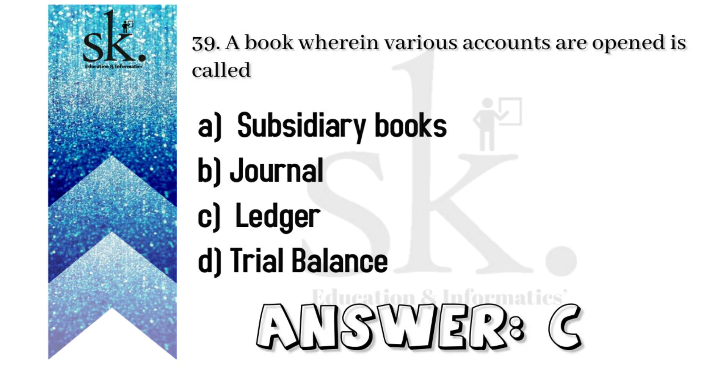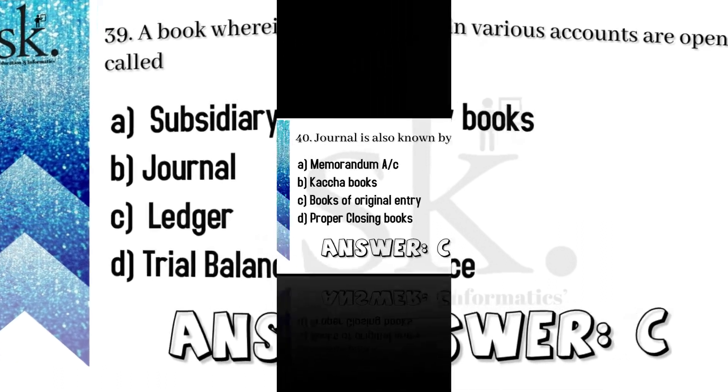A book wherein various accounts are opened is called — when you open various accounts it is basically the classification of accounts, therefore the answer is C — ledger.